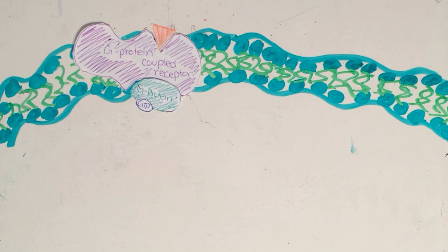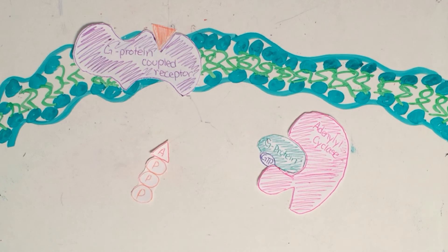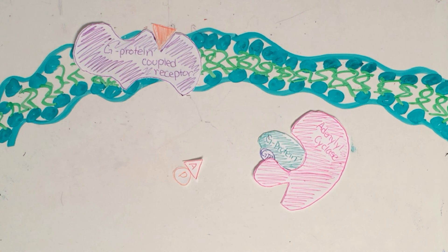Then, GTP replaces the GDP on the G-protein. The activated G-protein binds to adenylyl cyclase. The job of adenylyl cyclase is to convert ATP to cyclic AMP, or adenosine monophosphate.